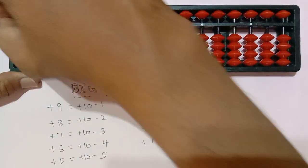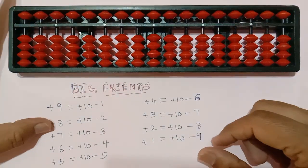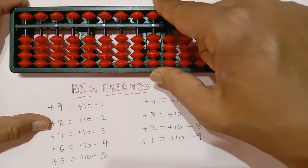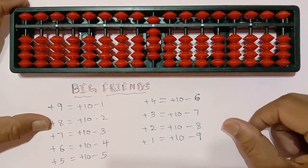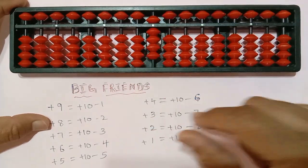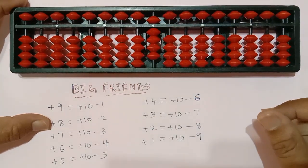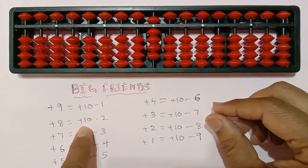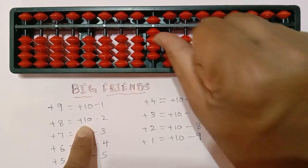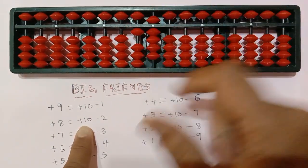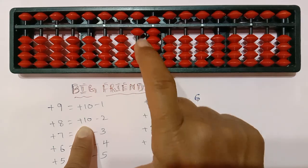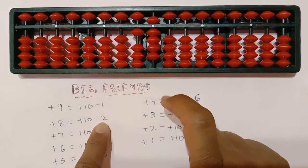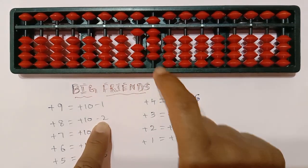So let us see how to add 8. For example, 9 plus 8. 9 is there. We have to add 9 plus 8. Plus 8 means what we have to do? We have to add 10. This is the 10th place. So we have added here 10. And what we have to do? We have to subtract 2.